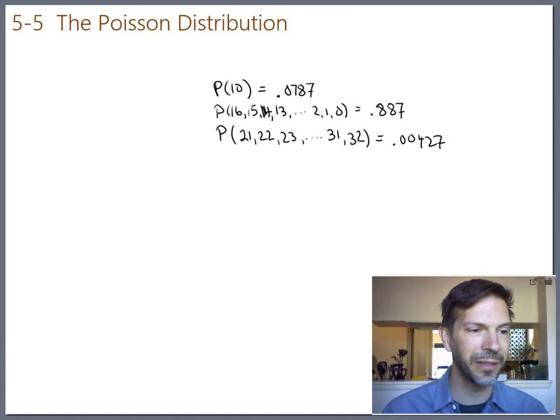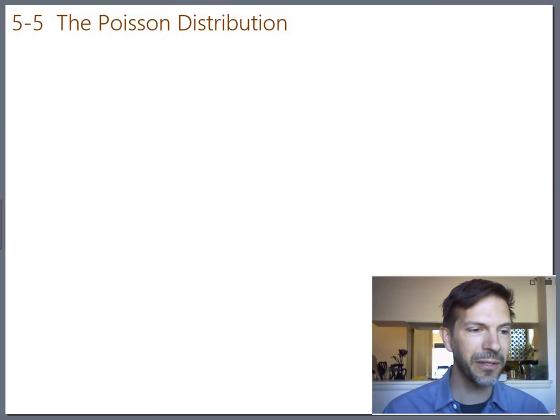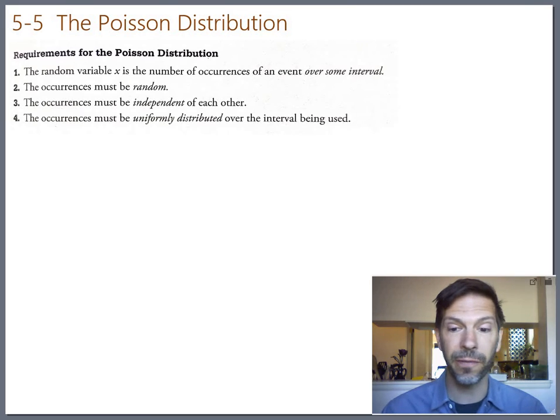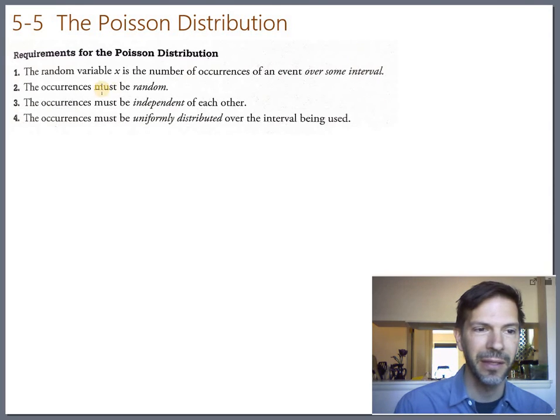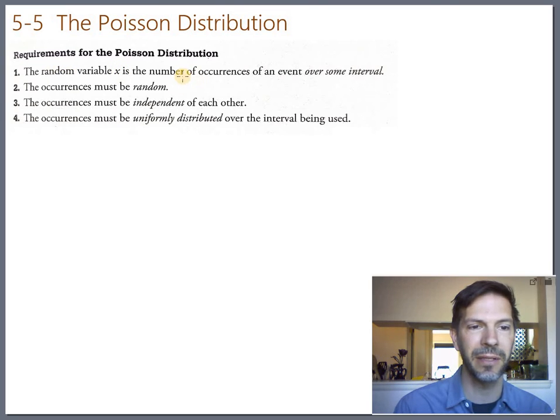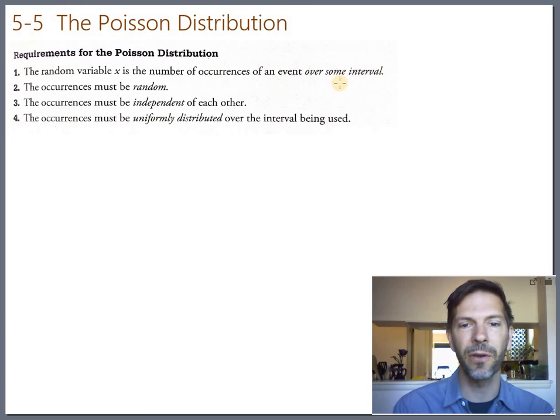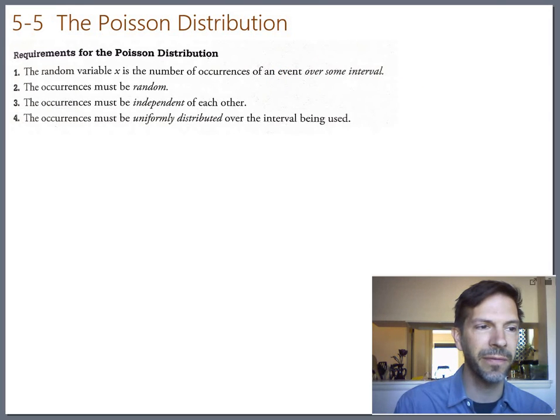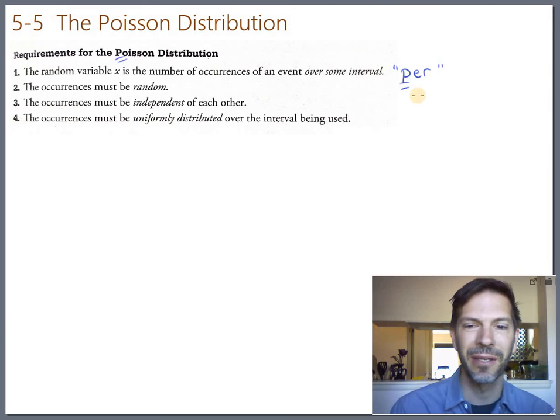The Poisson distribution has different requirements than the binomial, but there's four of them, just like there were for the binomial. The big one for the Poisson is that you've got a random variable X, and this time it stands for the number of occurrences of an event over some interval. The way I often tell students to remember this is you need a per.